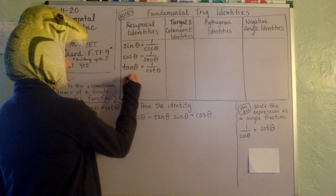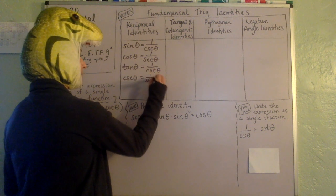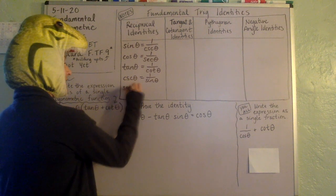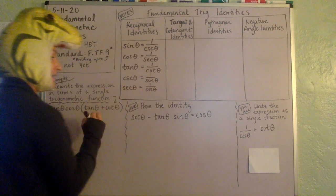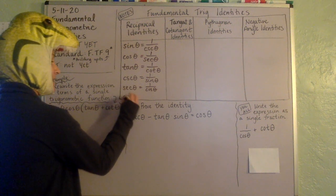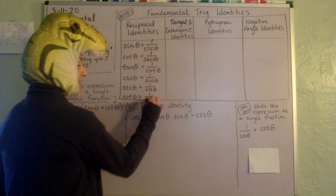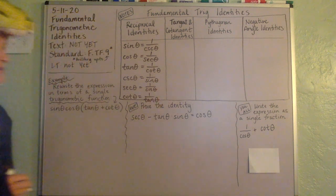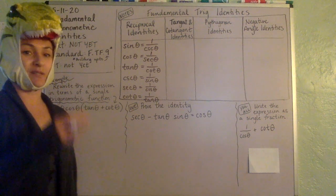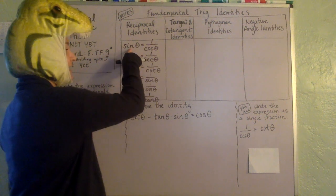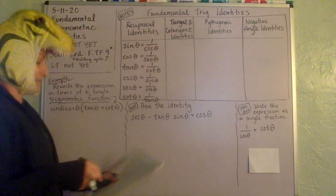You can also say that cosecant is one over sine, secant is one over cosine, and cotangent is one over tangent. Be sure you get those down because the name of the game today is all about substituting — so anywhere you see a sine, you could replace it with one over cosecant.